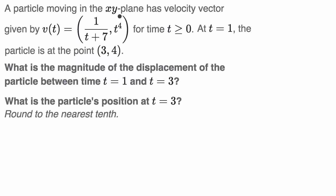A particle moving in the xy plane has velocity vector given by v of t. Using this notation, the x component of velocity is one over t plus seven, and the y component of velocity is t to the fourth, for time t greater than or equal to zero.